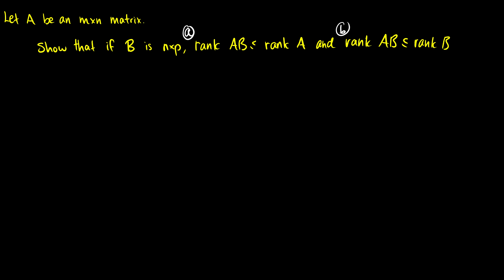The first thing to remember is that rank is really just the dimension of the column space. So when we say rank(AB) is less than or equal to rank(A), we're saying the dimension of the column space of AB is less than or equal to the dimension of the column space of A.